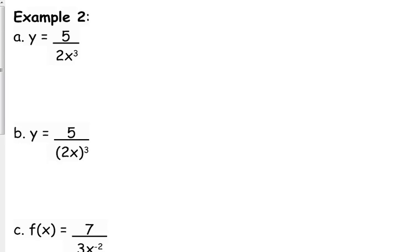Okay, 5 over 2x cubed. That's just like the problems that you've been doing. When you rewrite it, the constants do not move. The only thing that moves is the x to the third. We move it to the numerator and give it the negative exponent.